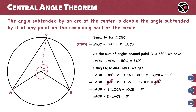This completes our second proof of the Central Angle Theorem. The angle subtended by an arc at the center is double the angle subtended by it at any point on the remaining part of the circle.